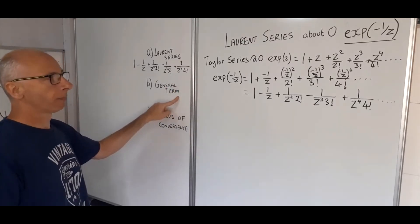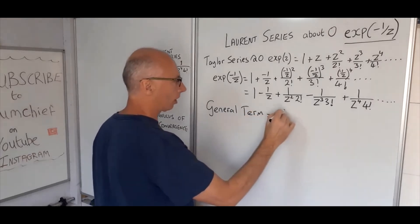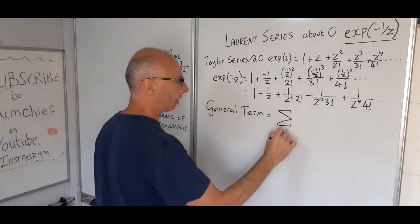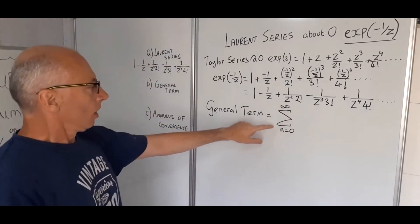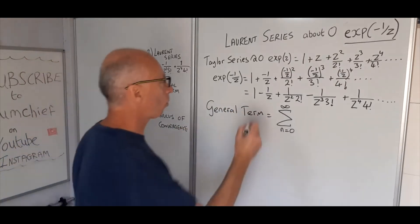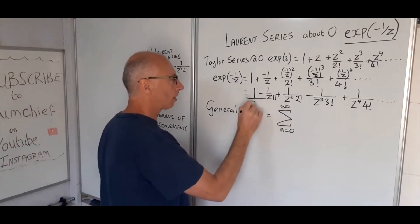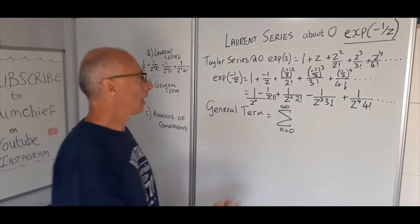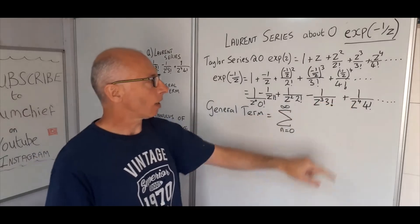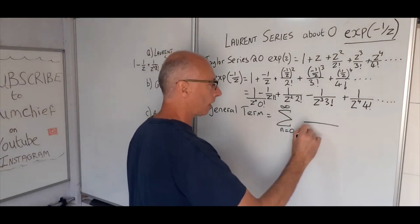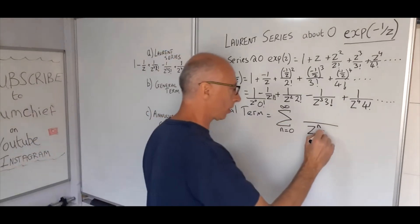Now we need to find a general term — basically a summation series. We're looking for a sum from n equals zero to infinity. When n equals zero we have z to the power of zero — which is one — and a zero factorial, which is also one. So that stays as one. We have increasing powers of z starting from zero all the way to infinity, so we have z to the n in the denominator, and n factorial also follows the sequence.